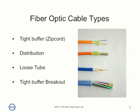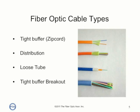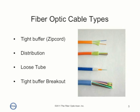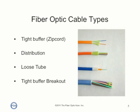The next layer is a strength member, usually an aramid fiber, that can be used for pulling the cables. Finally, the entire cable is covered by a jacket designed to withstand the environment into which the cable is going to be installed. Tight buffer cable — zip cord is shown — distribution and breakout cables are used indoors.